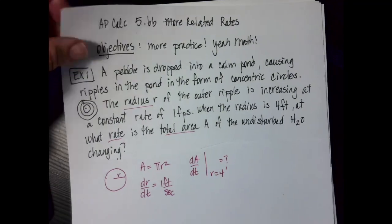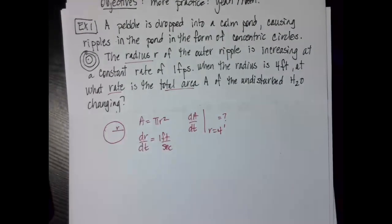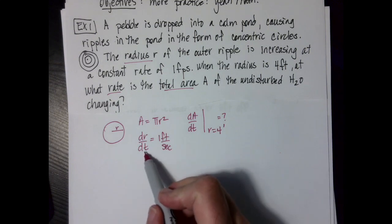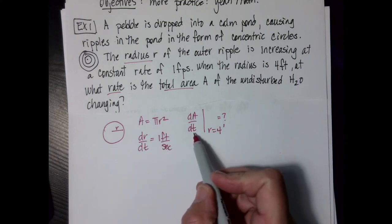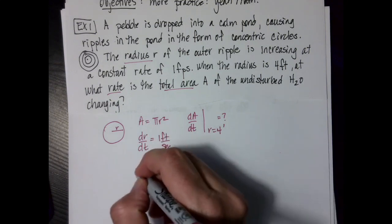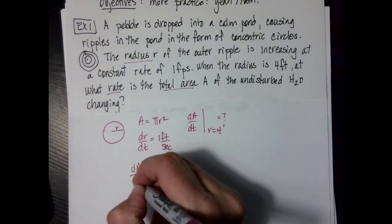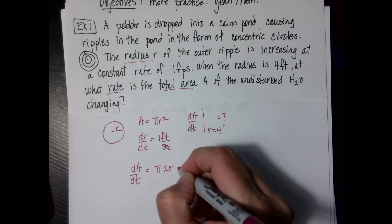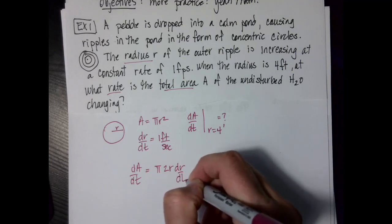This one's actually polite and straightforward because I don't need to write a secondary equation. I have dr dt, I'm looking for da dt. So when I take the derivative, I'm going to get da over dt equals pi times 2r dr over dt.